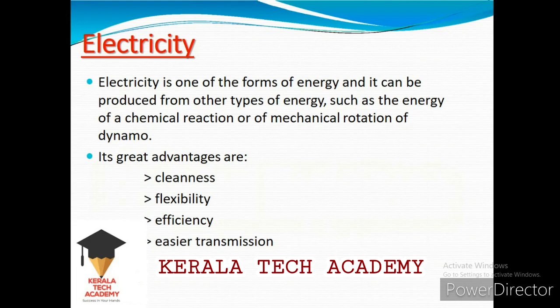Electricity is one of the forms of energy and it can be produced from other types of energy, such as the energy of a chemical reaction or of mechanical rotation of a dynamo. Energy cannot be created but can be transferred. Electricity is one of the cleanest, most flexible, efficient forms of energy and it is easier for transmission.